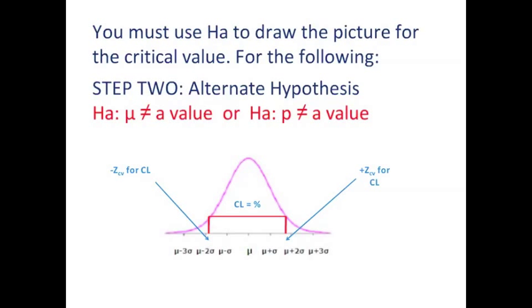In order to interpret HA and find a critical value, you have to use HA to draw the picture. Now let's take this first possible alternate hypothesis, which says mu is not equal to a value.